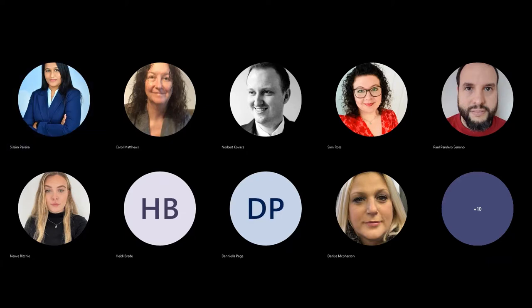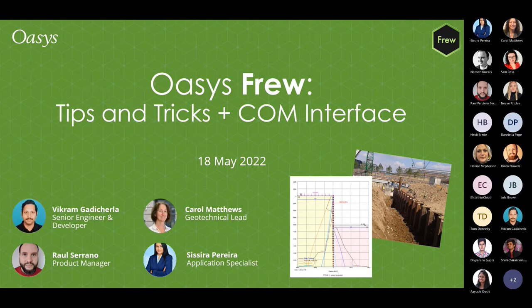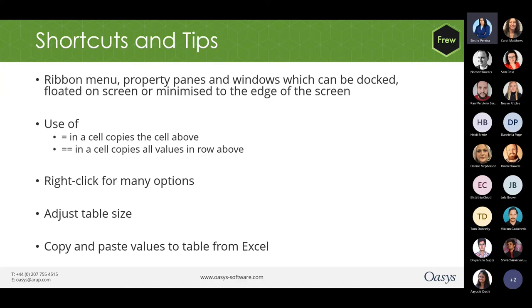To summarize the shortcuts and tips we have seen: the new FRU has a ribbon menu which is user-friendly, and the property panes and windows can be docked, floated on screen or minimized to the edge of the screen. In the input tables, if you use equals in a cell it can copy the cell above, and if you use equals-equals in a cell it copies all the values in the row above. You can right-click on tables or in any of the panes for different options, adjust the table size using Ctrl and the mouse scroll wheel, and copy and paste values to the table from Excel. That brings us to the end of this part of the presentation and I now invite Raul to continue.